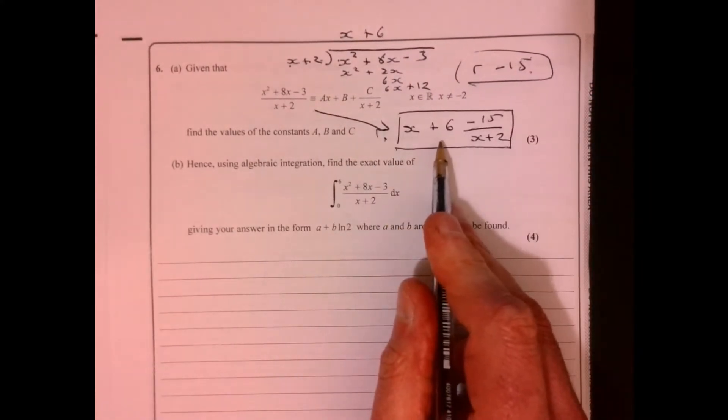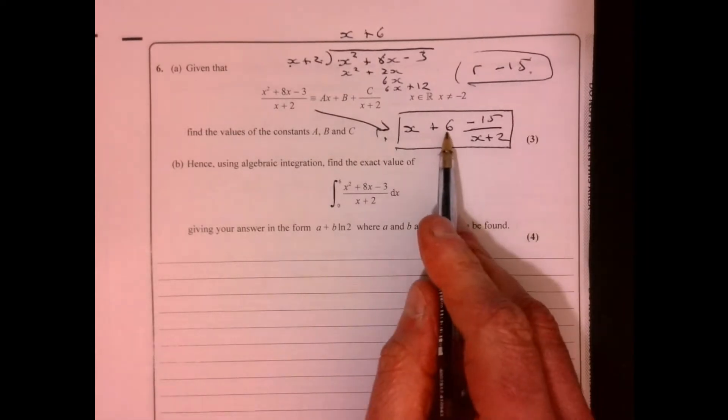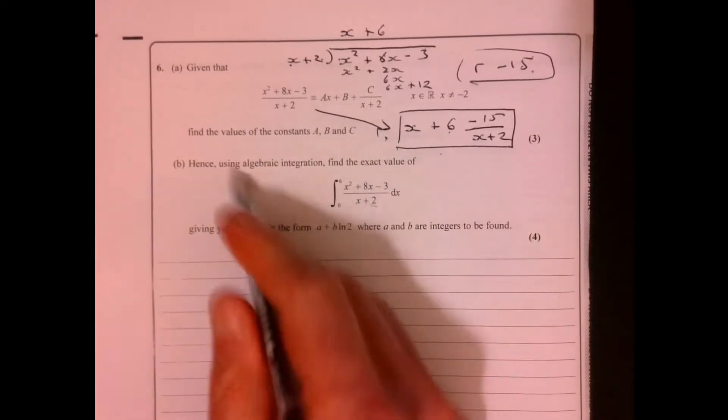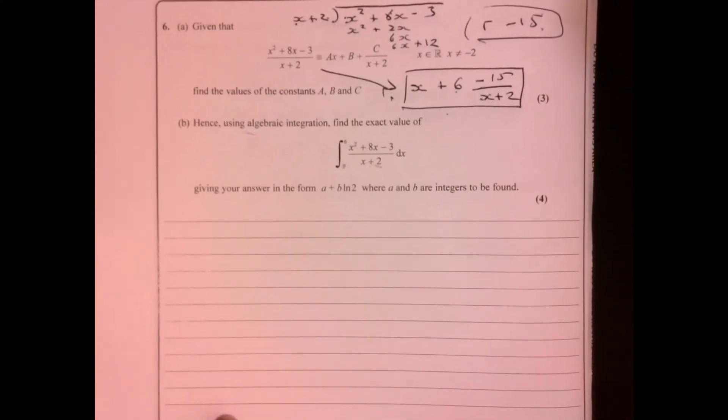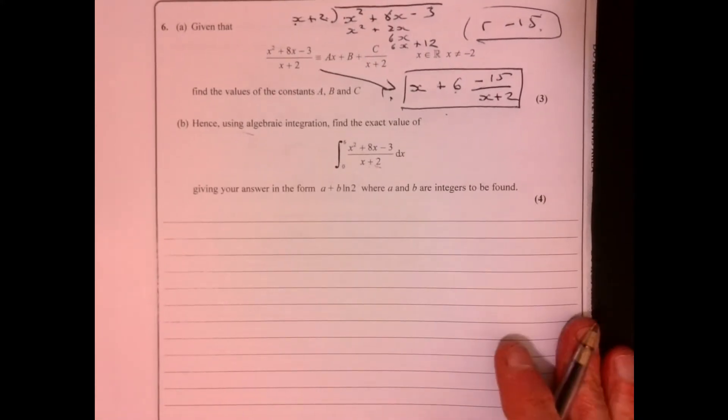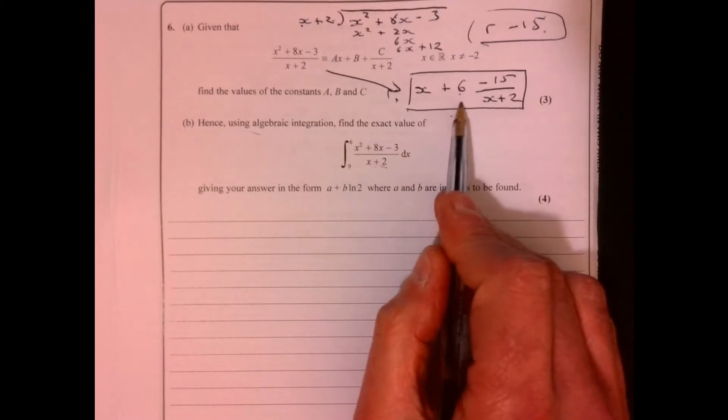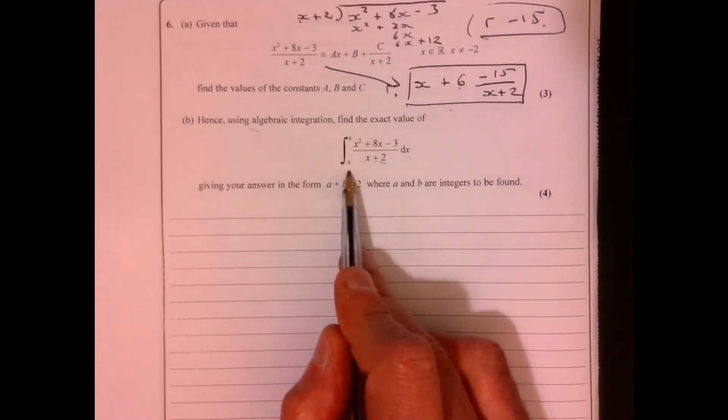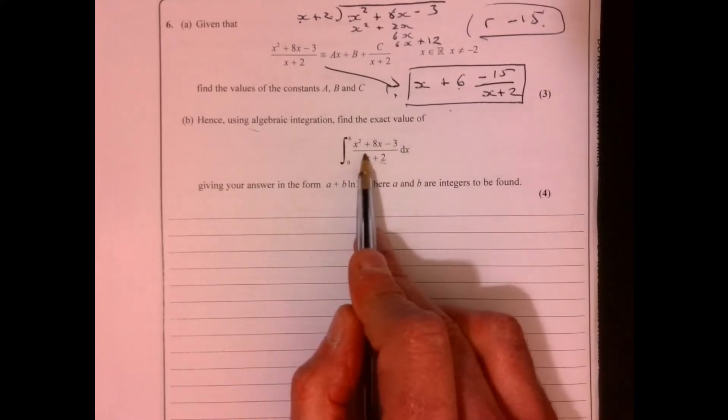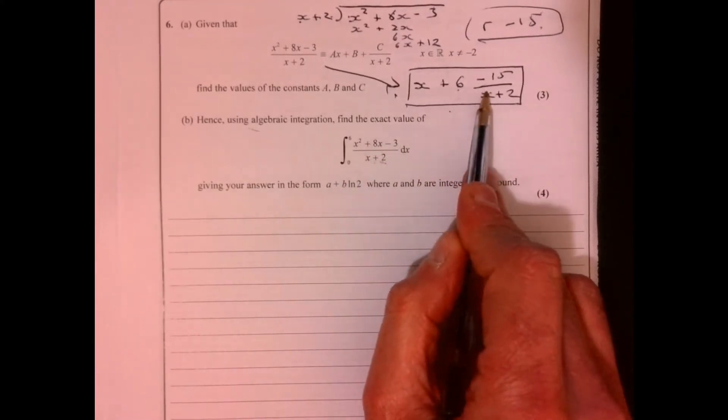Now, with this question, quite unusual actually, because you need this bit to be able to do part b. Normally it's like, show that. Right, so let's have a look at part b, because you're going to be a bit stuck on part b if you haven't got this bit here. We need to integrate. Obviously, we've got limits, but don't try and integrate this.